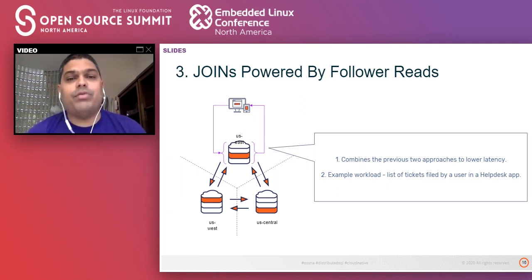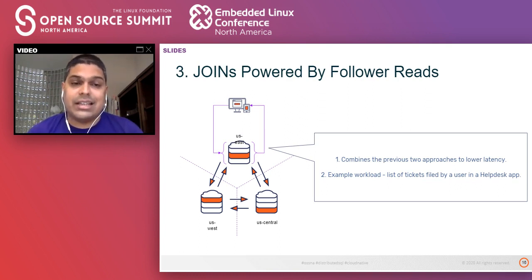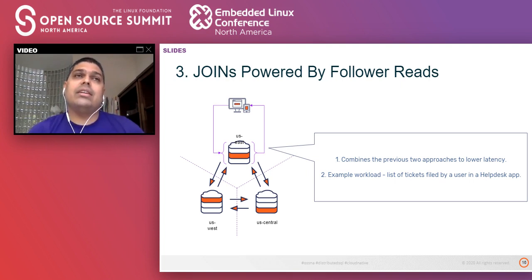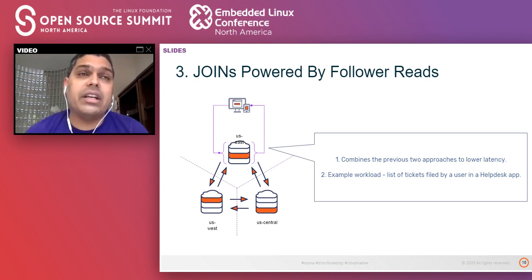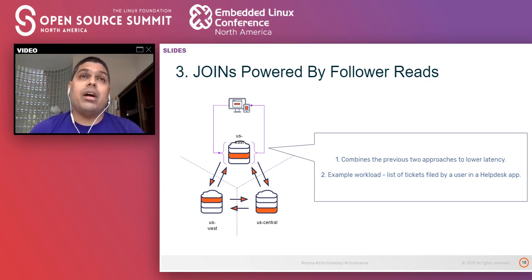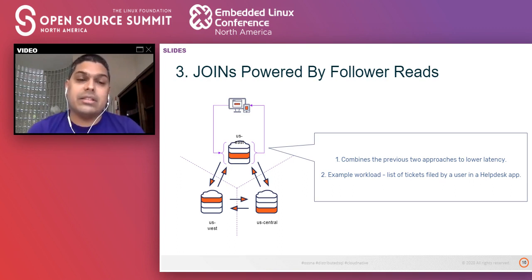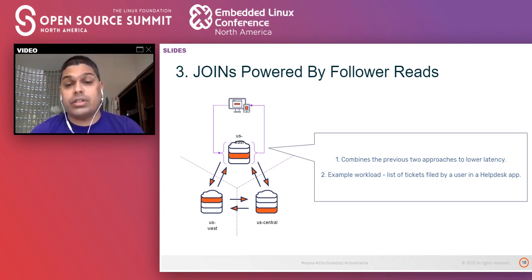Joins powered by follower reads is essentially a combination of techniques one and two. Instead of relying on just the shard leader or just the followers, we take a sum total of that view and go to any node to get a list such as tickets filed by a single user. This will not be 100% accurate but will have slightly stale, timeline-consistent information that is good enough for most purposes if we want to avoid cross-region latencies in distributed SQL architectures.